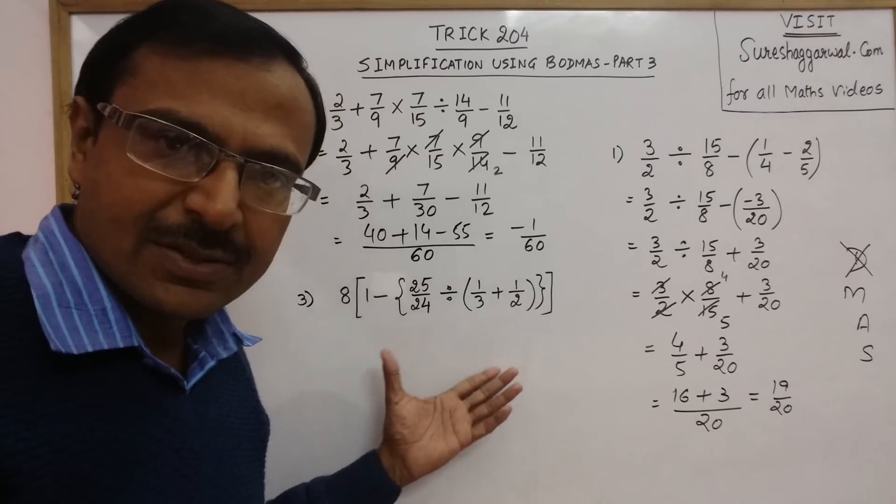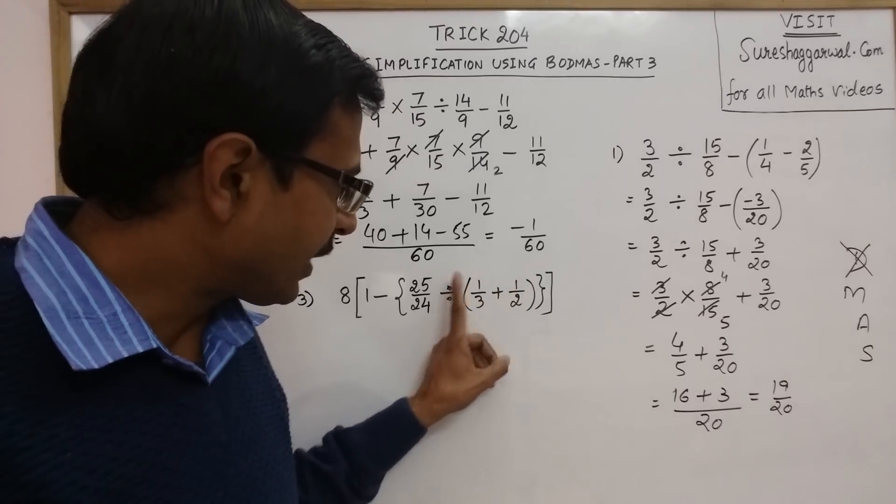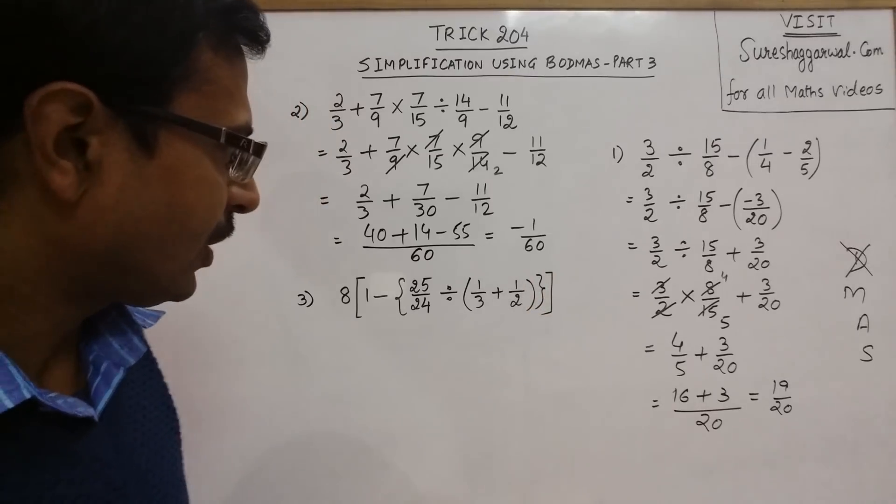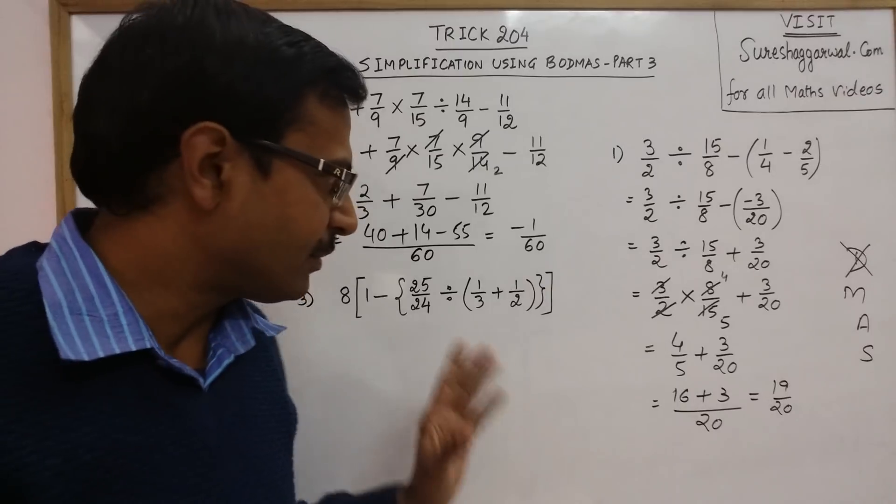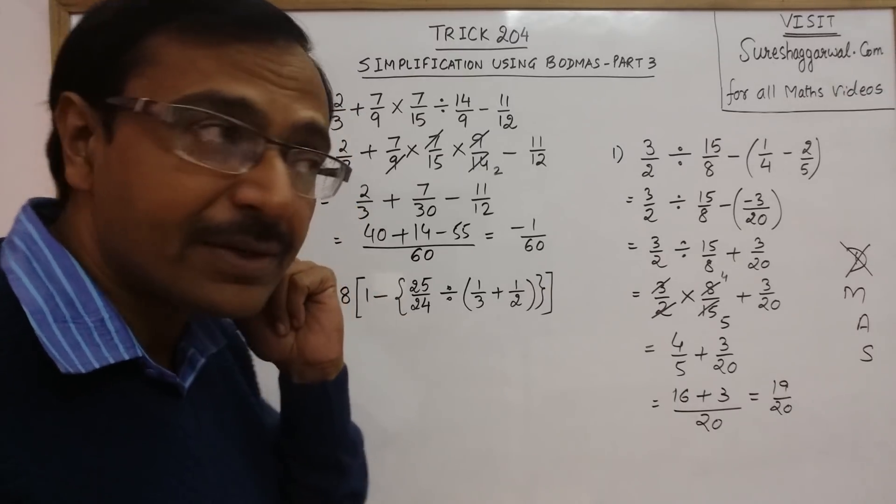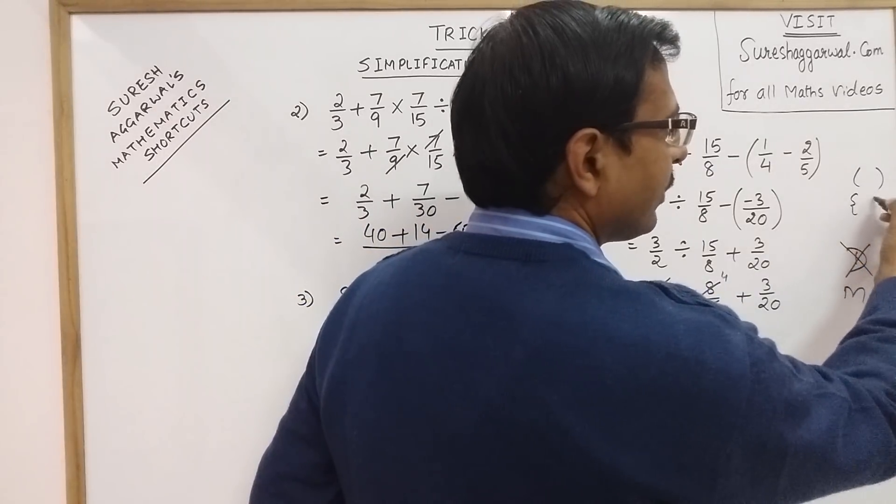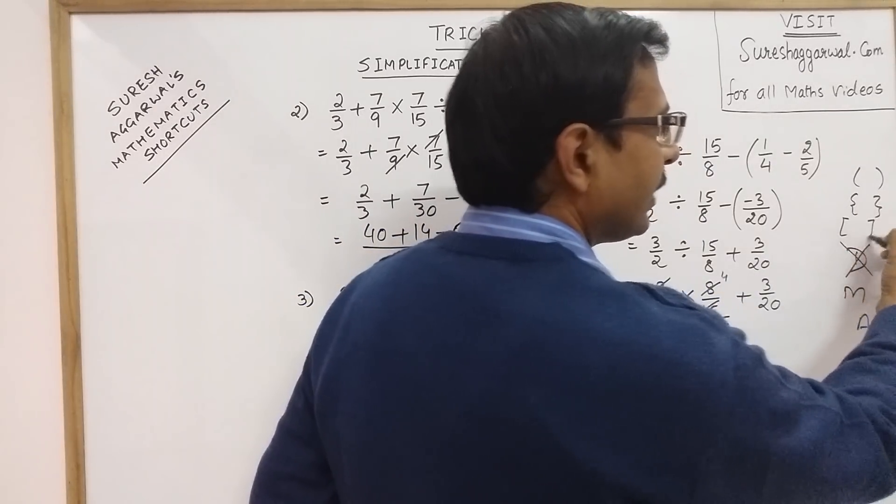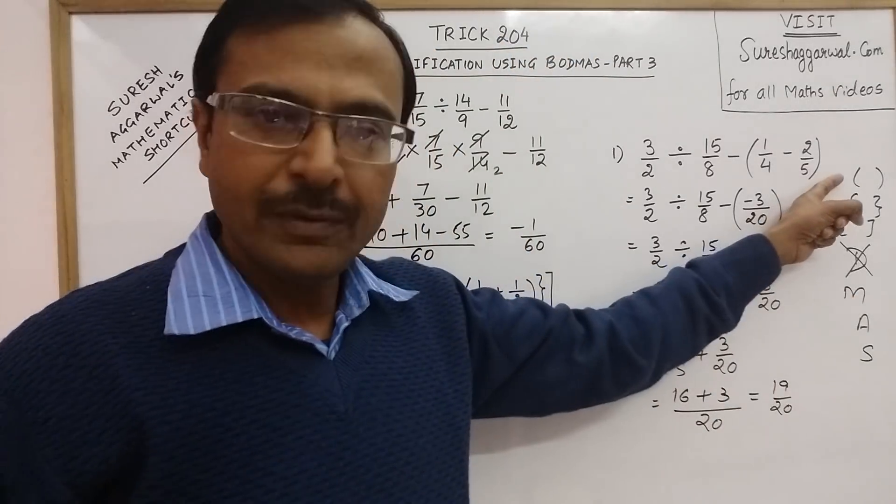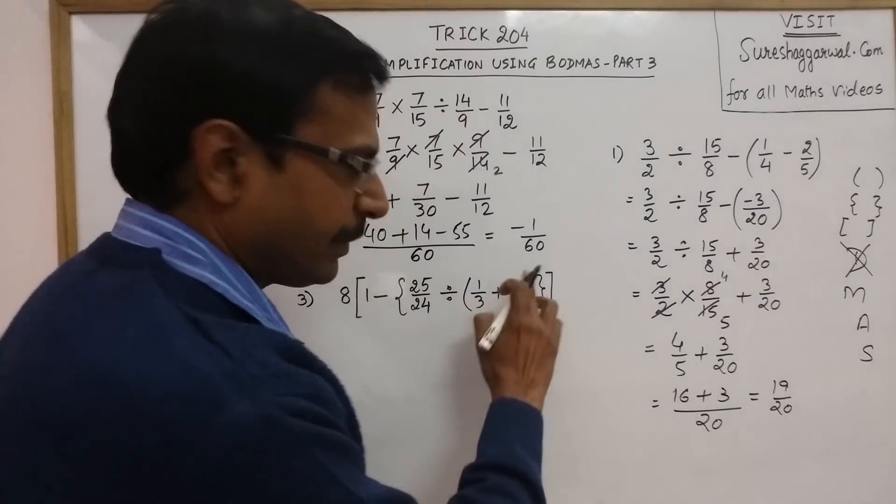Now here in this question you have all three brackets: the simple bracket parenthesis, the curly brackets and the square brackets. Let us solve these brackets. In the priority list, we have the sequence of brackets. We have to solve this bracket first, then followed by the curly brackets, and then followed by the square brackets. First of all we will solve the parenthesis.